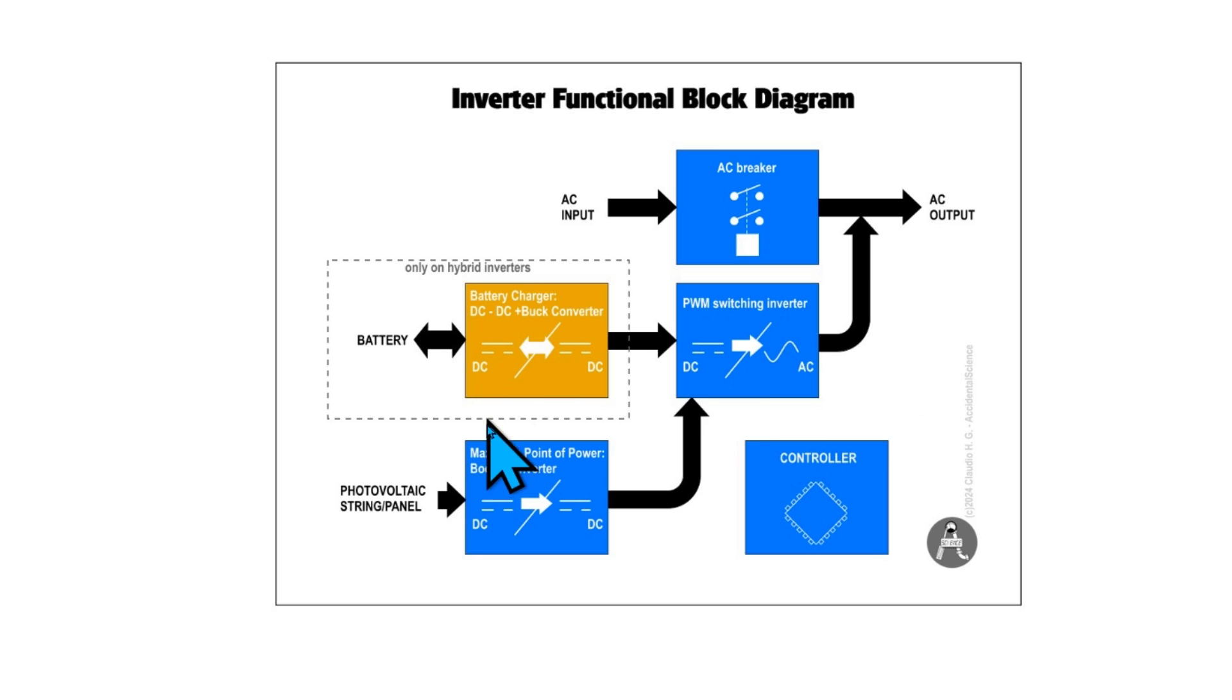Then we have the maximum power point boost converter and converts from DC to DC rising the voltage if required to compensate the lower voltage in the case the panel has not enough sunlight or in short to adjust the power point, the maximum power point.